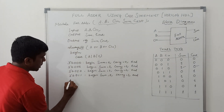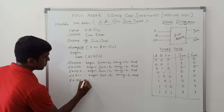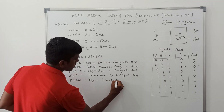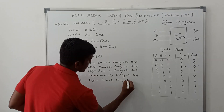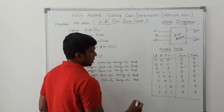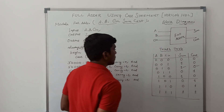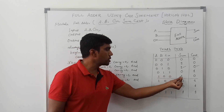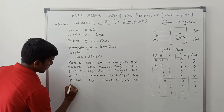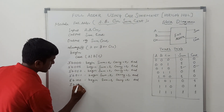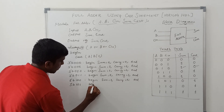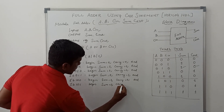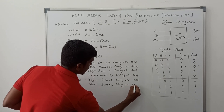The next input is 3'b100, begin: Sum = 1, Cout = 0. End. So for input 1,0,0 the corresponding output is Sum = 1 and Cout = 0. Then next input 3'b101, begin: Sum = 0, Cout = 1. End.